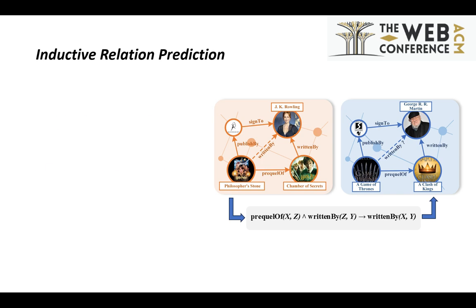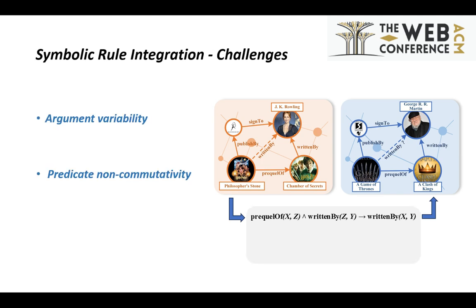There exist two issues to be solved. The first is argument variability. Integrated rules in KGs follow an argument variability of the logic, which is essential for obtaining entity-independence for the model. The arguments are variable — if the arguments are changed from x, y, z to a, b, c, the semantics of the rule does not change.